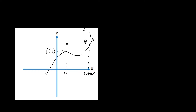For point Q, the corresponding y-value is f of a plus delta x, where delta x is the change of x. We will now be deriving our equation for the slope of the tangent line using the equation of the slope of the secant line.